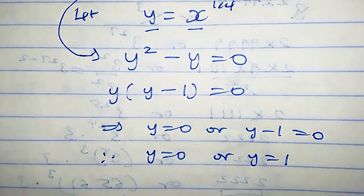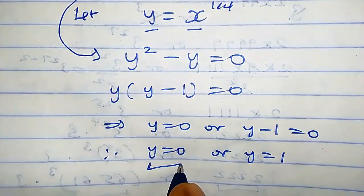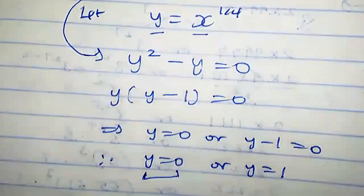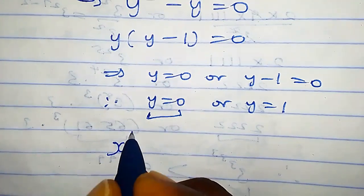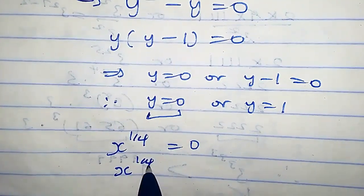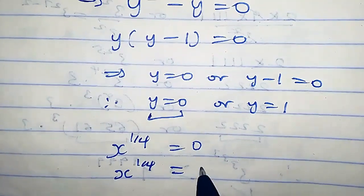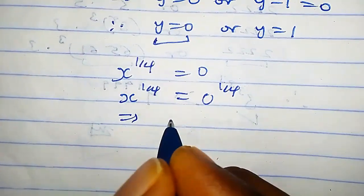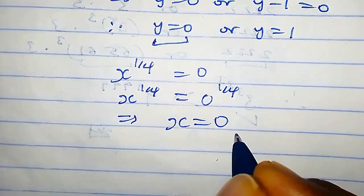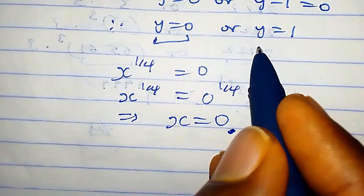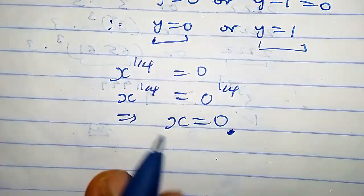Our aim is to find x. When y equals zero, we plug it in to get x raised to the power one over four equals zero, which can be written as x raised to the power one over four equals zero raised to the power one over four, which implies x equals zero. That is one value for x.